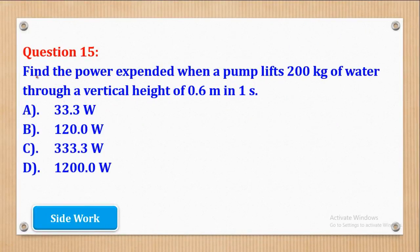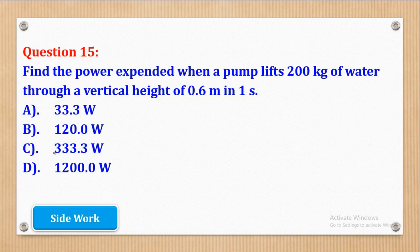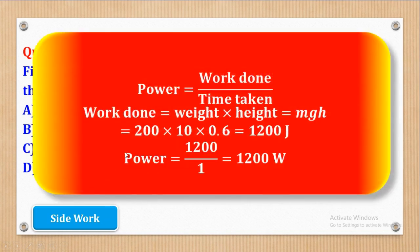Question 15: find the power expended when a pump lifts 200 kilograms of water through a vertical height of 0.6 meters in one second. Part A: 33.3 watts. Part B: 120.0 watts. Part C: 333.3 watts. Part D: 1200.0 watts. We know that power equals work done over time taken, and since the water is lifted vertically, work done equals weight times vertical height.